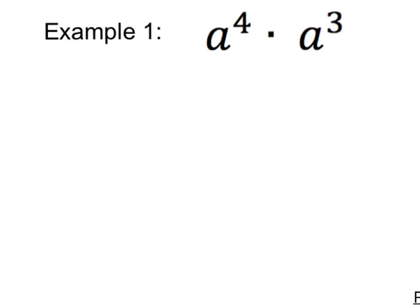Please write example 1 into your notebook. This example says a to the 4th power times a to the 3rd power. What that specifically means is we will have a multiplied by itself 4 times, and we'll take that times a multiplied by itself 3 times.